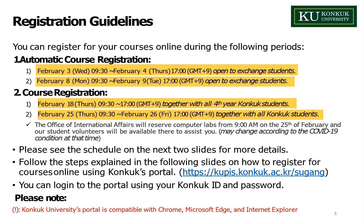These are the schedules for course registration. The automatic course registration for exchange students will happen two times. The first will start February 3rd at 9:30 a.m. and end February 4th at 5 p.m. The second automatic registration will start February 8th, Monday, and end February 9th, Tuesday. The actual course registration for fourth-year Konkuk students — which also applies to exchange students — will happen February 18th, Thursday, and end the same day at 5 p.m. The second round will be for all Konkuk students, starting February 25th, Thursday at 9:30 a.m., and ending February 26th at 5 p.m.